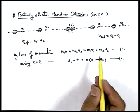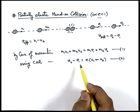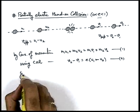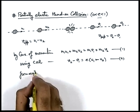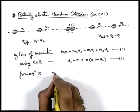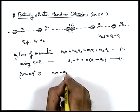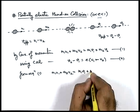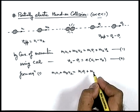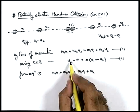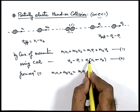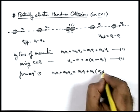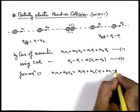Using these two equations we can find out the final velocities of bodies after collision. From equation one we can write m-one u-one plus m-two u-two equals m-one v-one plus m-two into v-two. Here the value of v-two can be written as v-one plus e·u-one minus e·u-two.